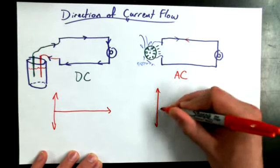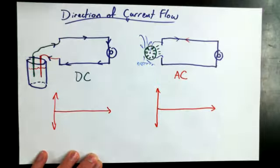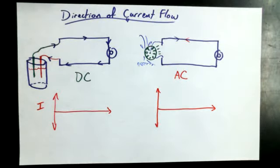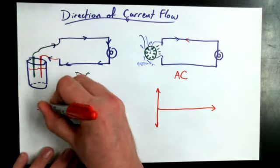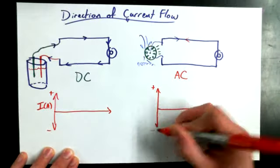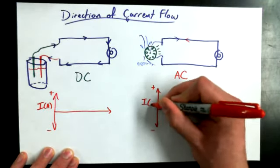I want to try and graph this. And if I have a graph, and don't worry. We're not doing a whole lot of graphs. Don't cry. If you're prone to tears, it's going to be okay. Positive axis, negative axis. We're going to measure current.